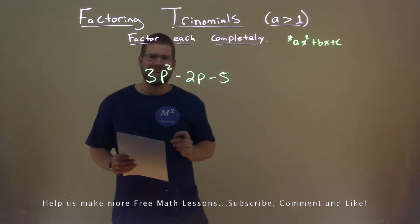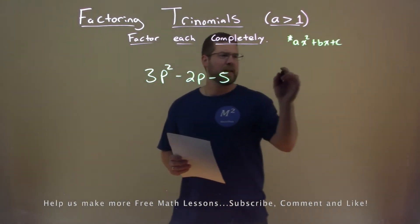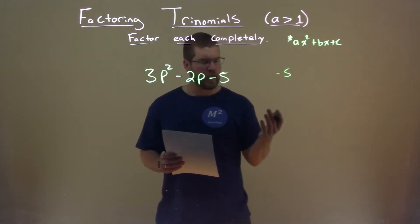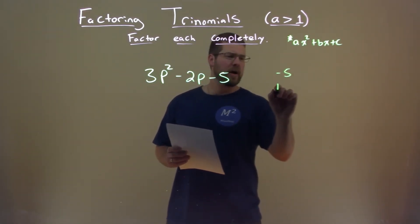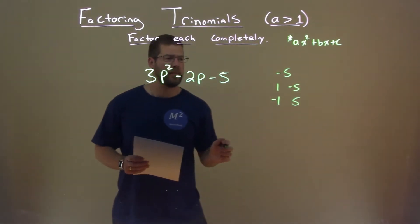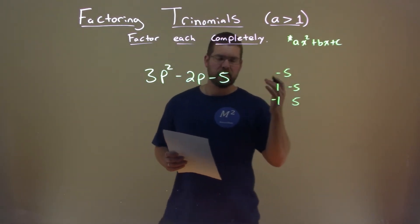I first look at my negative 5. I take that negative 5 and say, what two numbers will multiply to be negative 5? We have a positive 1 and a negative 5, and a negative 1 and a positive 5. Those two numbers when they multiply will equal negative 5.